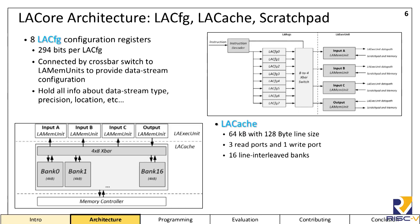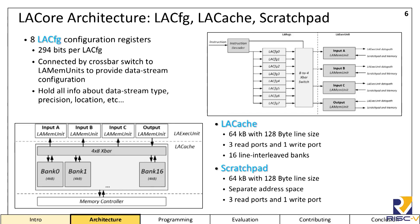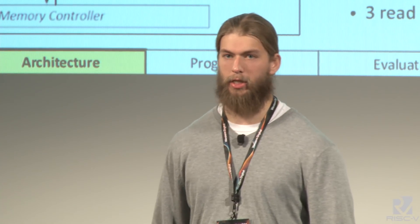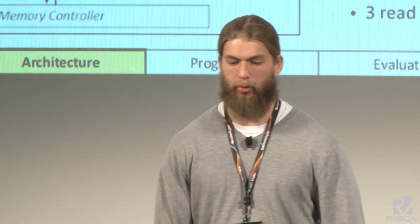The fourth piece is the LA cache, a 64 kilobyte L1 cache that exclusively services all main memory requests by the LA mem unit. It has 16 banks connected by crossbar switch to three independent read ports and a write port, giving a port for each of the LA mem units. The last piece is the scratch pad, which is a 64 kilobyte high throughput, low latency memory used for intermediate computation results. It has a separate address space, is explicitly addressed by the programming model, and like the LA cache, has three independent read ports and a write port. All of these parameters were decided by doing extensive sweeping across a broad range of linear algebra applications in GEM5.